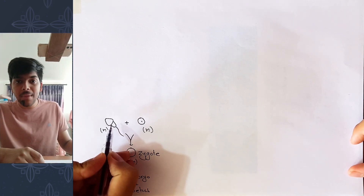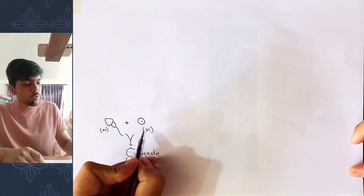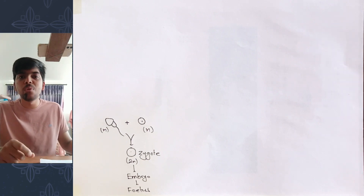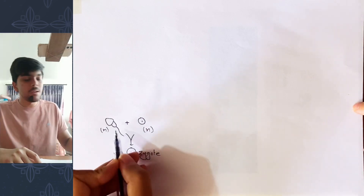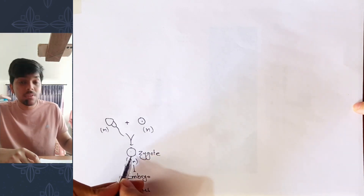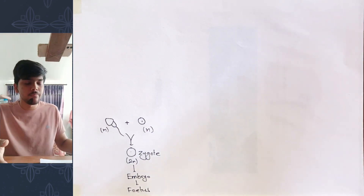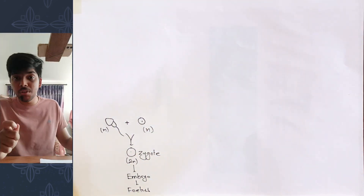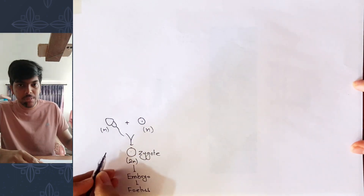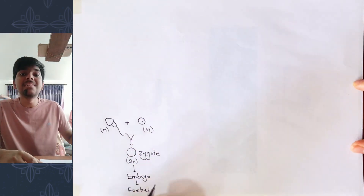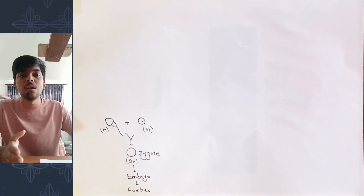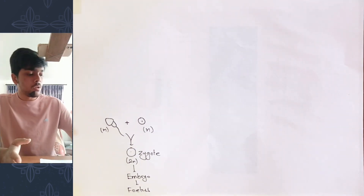The haploid sperm of a male fuses or fertilizes the haploid egg of a female. The sperm and the egg are gametes — the haploid reproductive cells. These two haploid reproductive cells fertilize to form a diploid zygote. This diploid zygote then develops into an embryo, which further develops into a fetus. The events taking place before, during, and after the formation of the embryo is what you are going to learn under the topic of embryology.